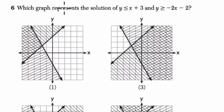All right, let's just read the question. Which graph represents the solution of y is less than or equal to x plus 3 and y is greater than or equal to negative 2x minus 2?